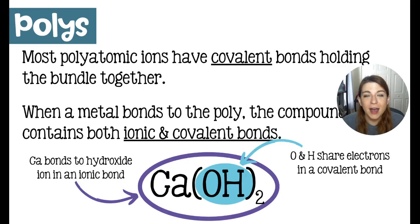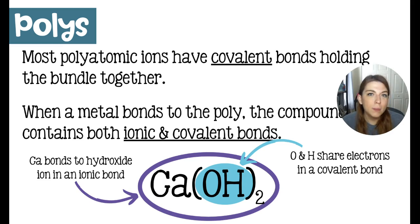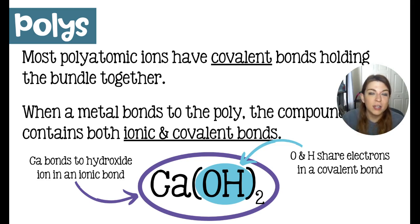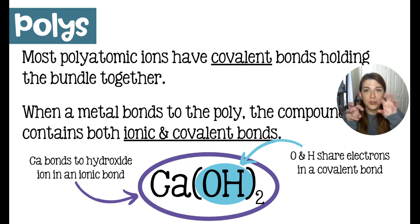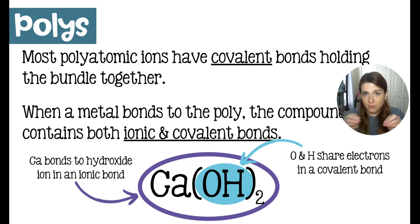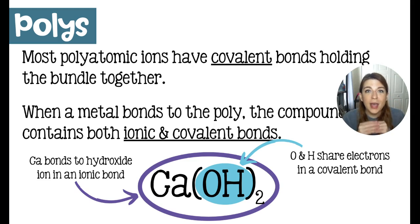We already know about polyatomic ions, and if you've been following this course, you have been looking at covalent bonds for a while and maybe didn't even know it. Most polyatomic ions are actually held together by covalent bonds — all the atoms in that bundle are sharing their electrons, but overall they wind up with a negative or positive charge, usually negative. So a metal is going to bond to that bundle of covalently bonded atoms that gathered a charge, forming an ion — and they form an ionic bond. But if you zoomed in and looked at the polyatomic ion itself, you would find covalent bonds.